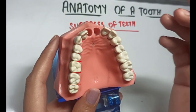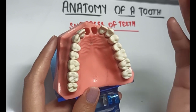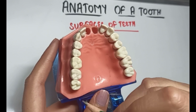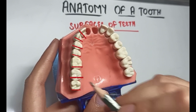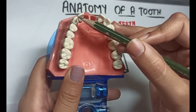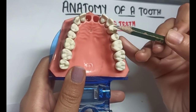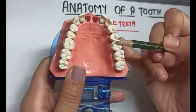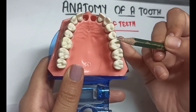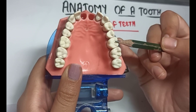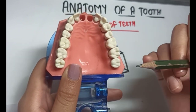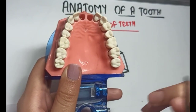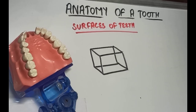The proximal surface of the tooth that is away from the midline is called the distal surface. The surfaces used for biting and chewing food are called the occlusal surfaces in posterior teeth — that is, in premolars and molars. For incisors and canines, these are called the incisal surfaces.